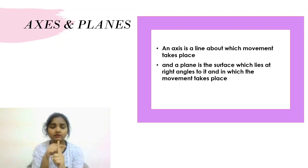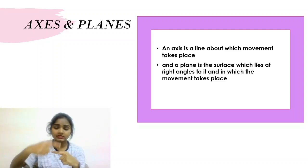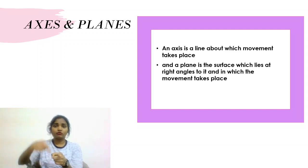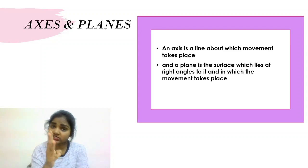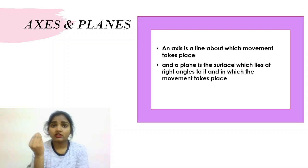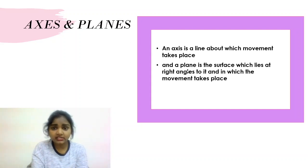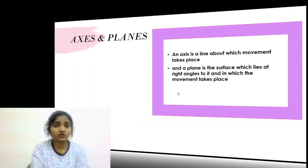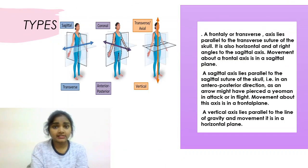If this is the axis, movement can happen this way — that is the plane where movement is happening. There are three types of axes, and with the same names you have three different types of planes according to where they are located. An axis is a line about which movement takes place, and a plane is a surface which lies at a right angle — perpendicular — to it, and in which movement takes place.